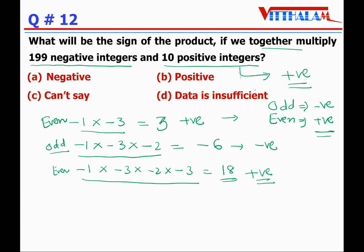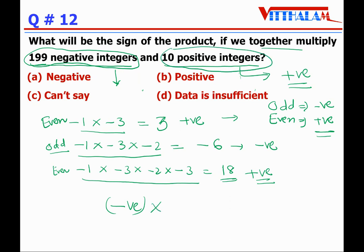Here, 199 negative integers — 199 is odd — so the sign of that product is negative. Then multiplying by 10 positive integers: positive integers always give positive sign. Negative times positive gives negative. Therefore the answer is negative, so the SOF answer is A.